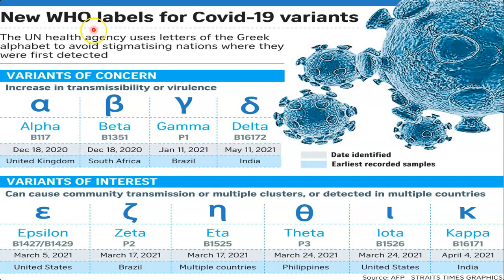The World Health Organization classifies different variants of concern and variants of interest. Variants of concern show increased transmissibility or virulence — greater ability to transmit from person to person or cause more severe disease. These variants include Alpha (B.1.1.7), reported on December 18, 2020 in the United Kingdom, and Beta (B.1.351), reported in South Africa.